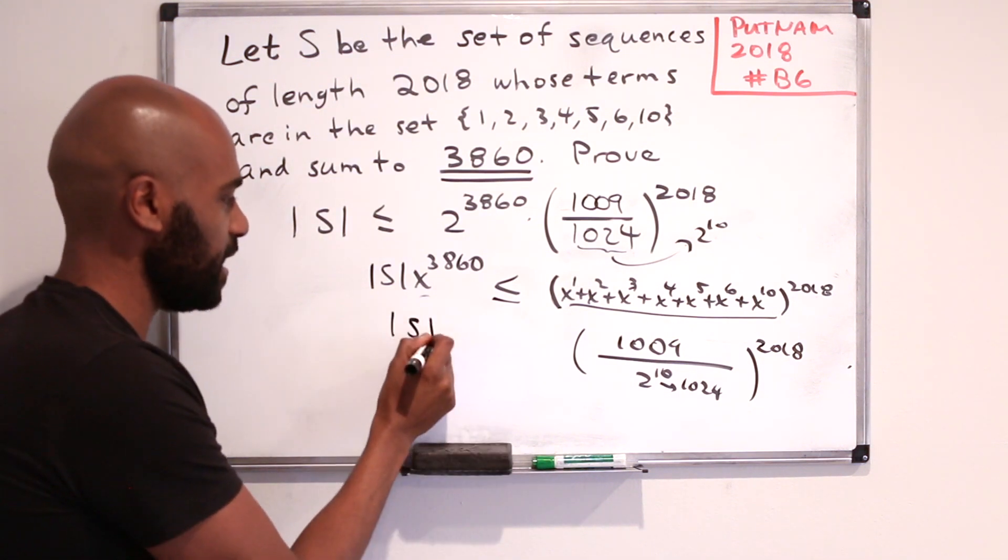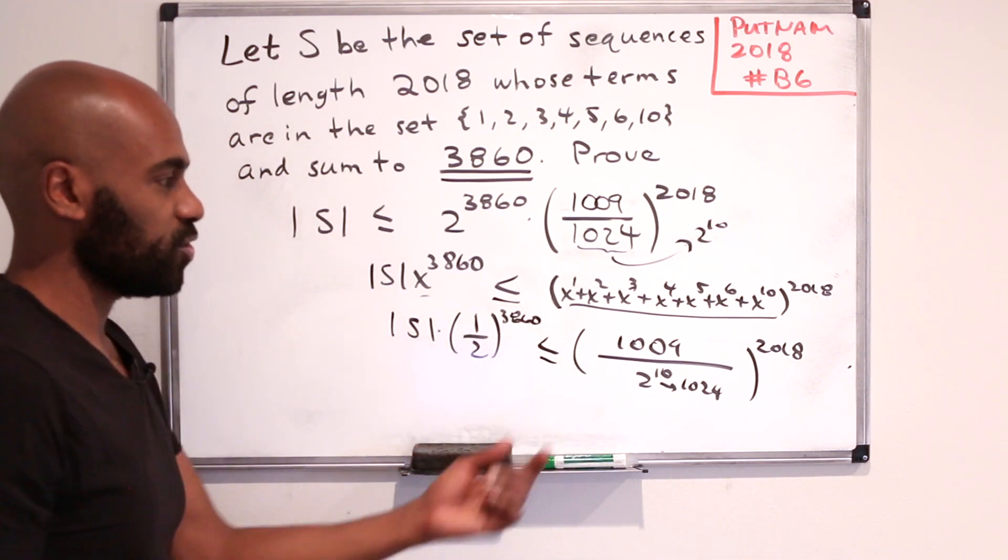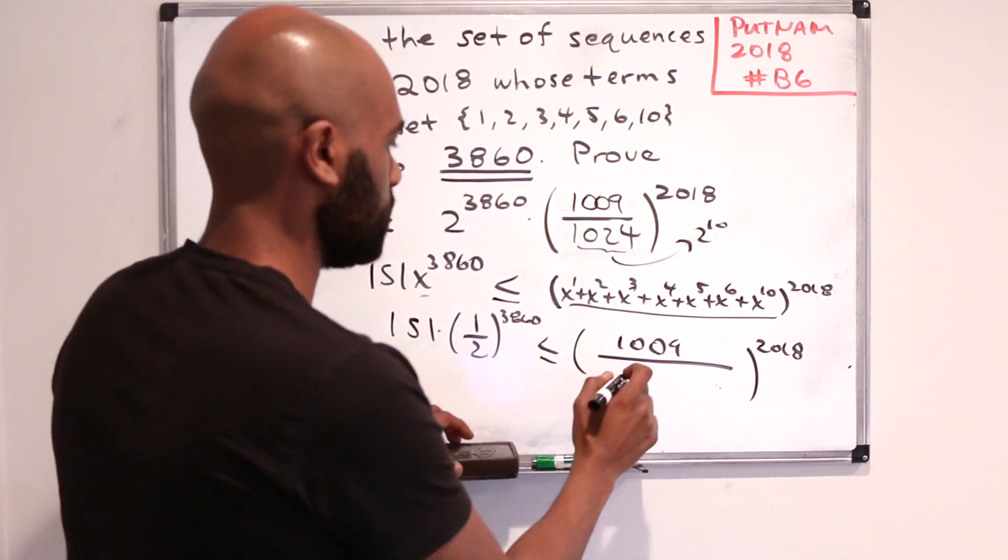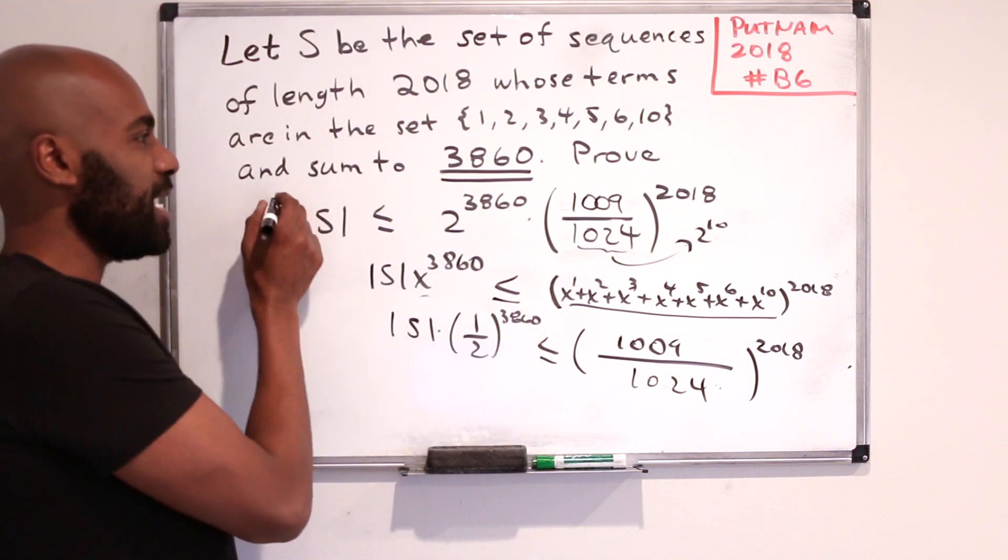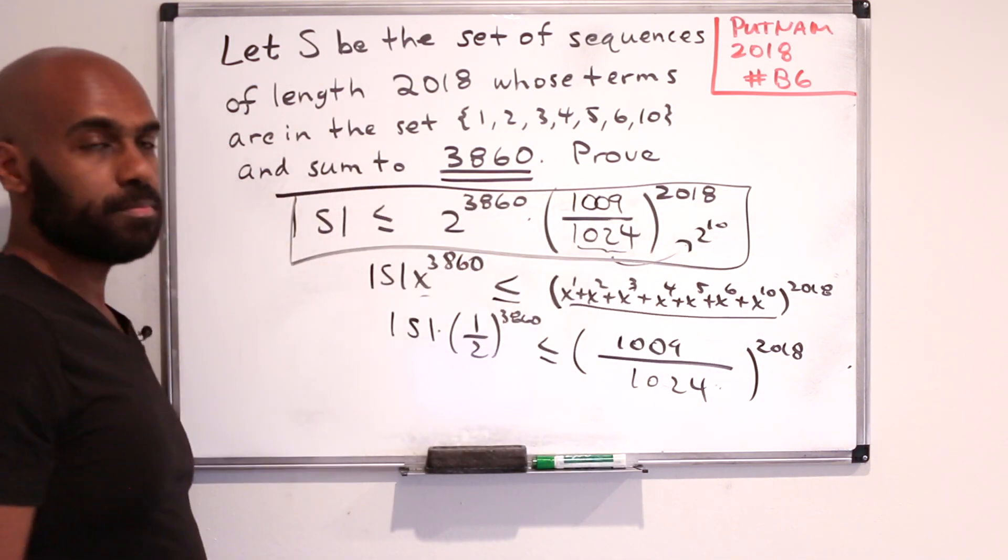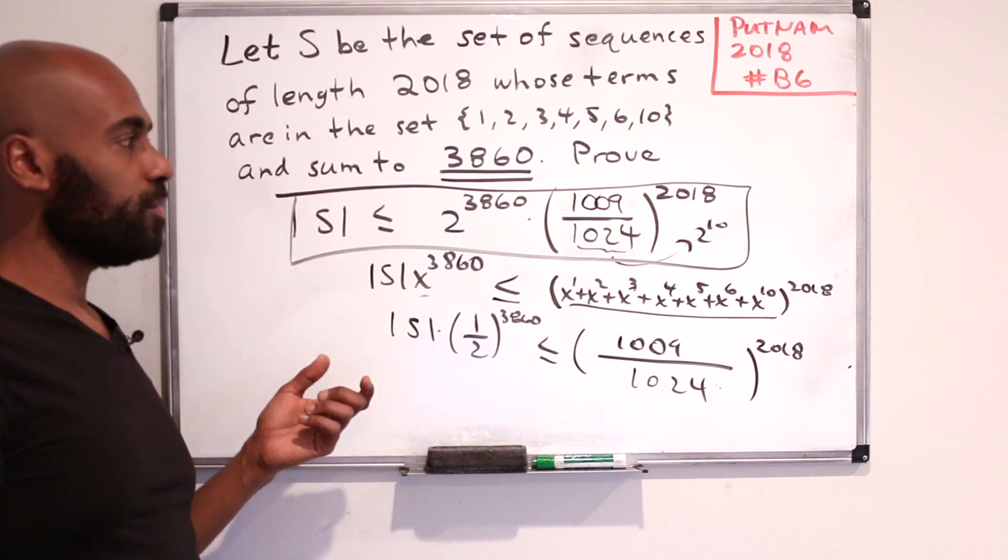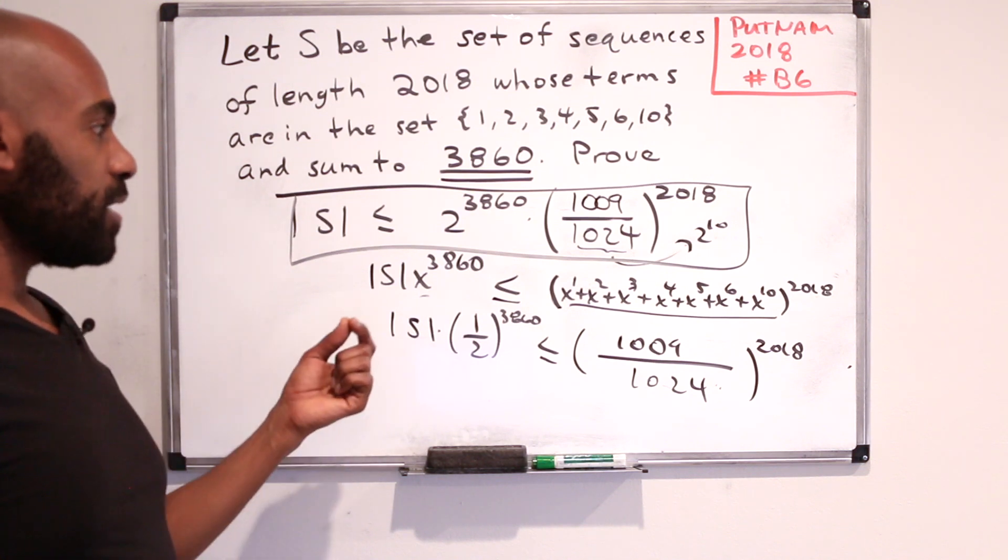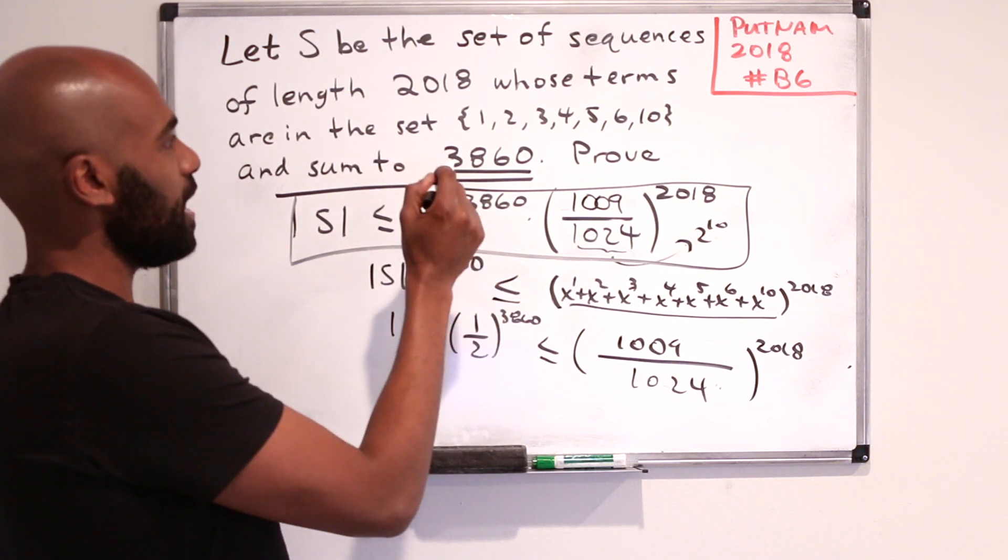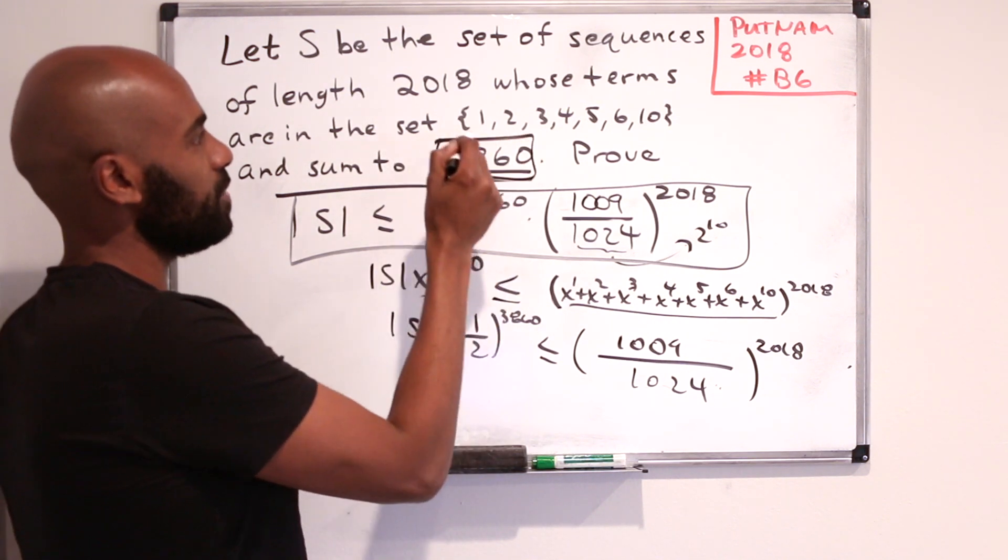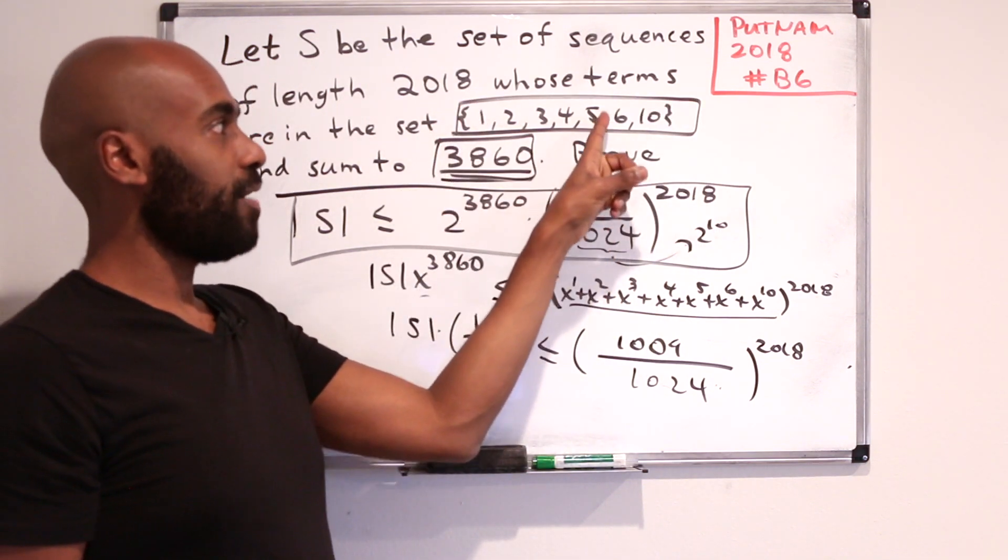So by plugging in x equals a half, you get that size of S times 1 half to the 3860 is less than or equal to this quantity you have over here, where we have a 1024 in the denominator. And then multiplying by this power of 2, we get exactly the inequality that we wanted in the problem. So this is kind of fascinating. It's a quite short proof that comes directly from exploiting generating functions.